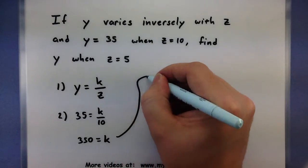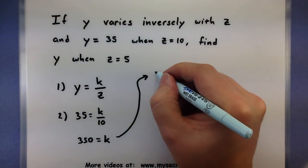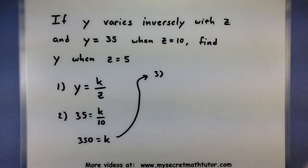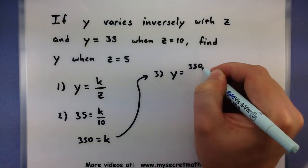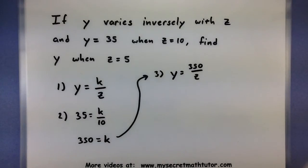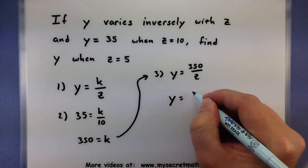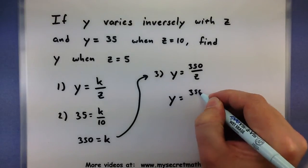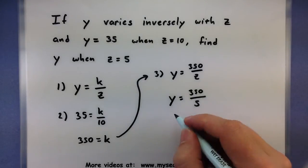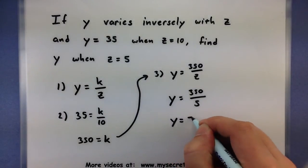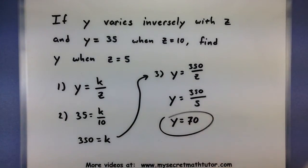Now that we know what k is, we'll go ahead and plug it back into the original formula. So this is y equals 350 all over z. And now we just want to finish off the rest of the problem. It says find y when z equals 5. We'll plug in z equals 5 and be able to figure out what y is. So 350 divided by 5 goes in there 70 times. And there's our answer.